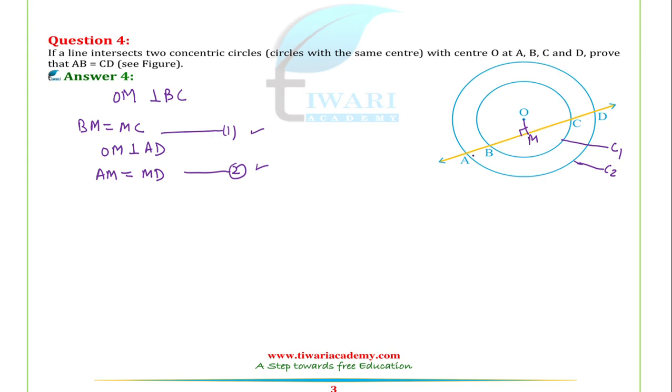Now, taking equation 2: AM equals MD, and equation 1: BM equals MC. If we subtract, AM minus BM equals MD minus MC. From the figure, AM minus BM equals AB, and MD minus MC equals CD. Therefore, AB equals CD. This is what we had to prove.